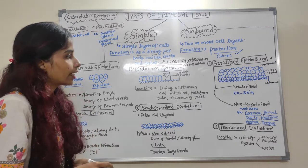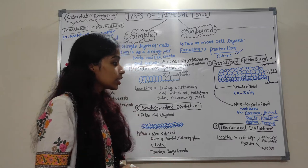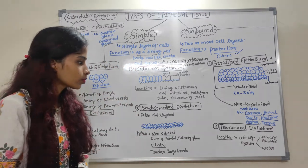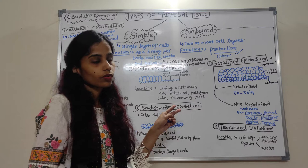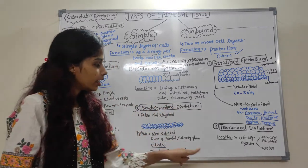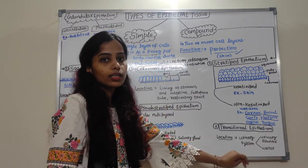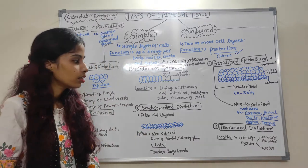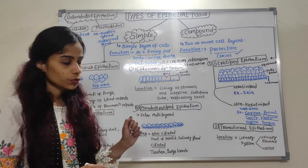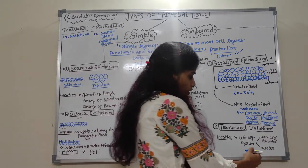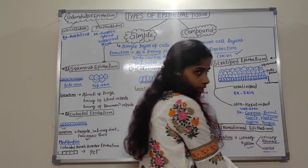Transitional epithelium is a type of compound epithelium found in the urinary system. Its other name is urothelial epithelium. It is found in the urinary bladder and ureter.